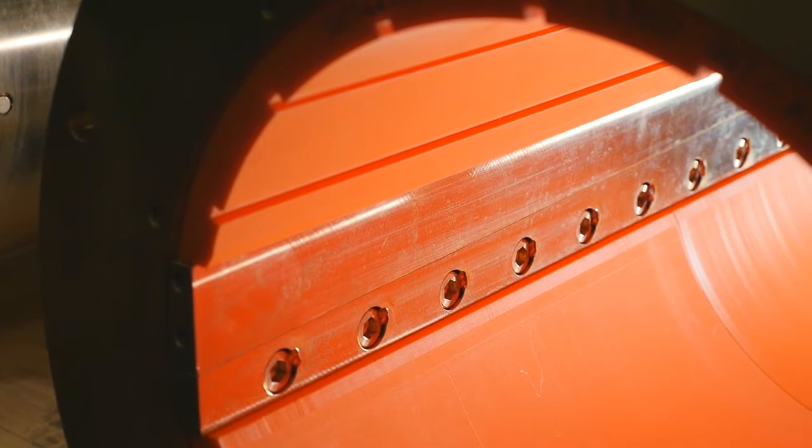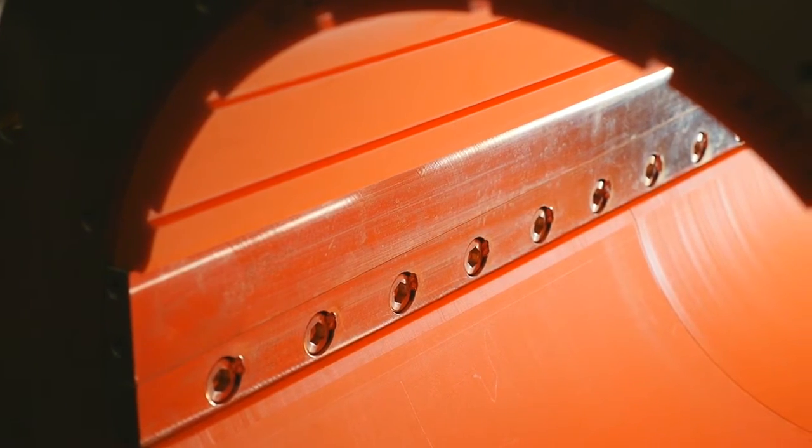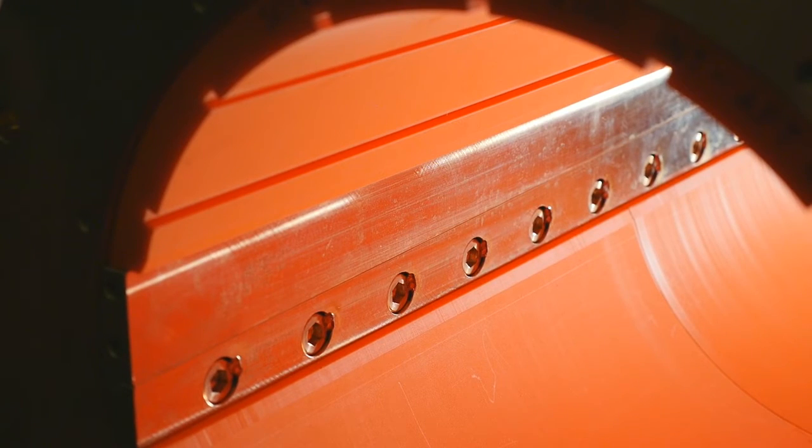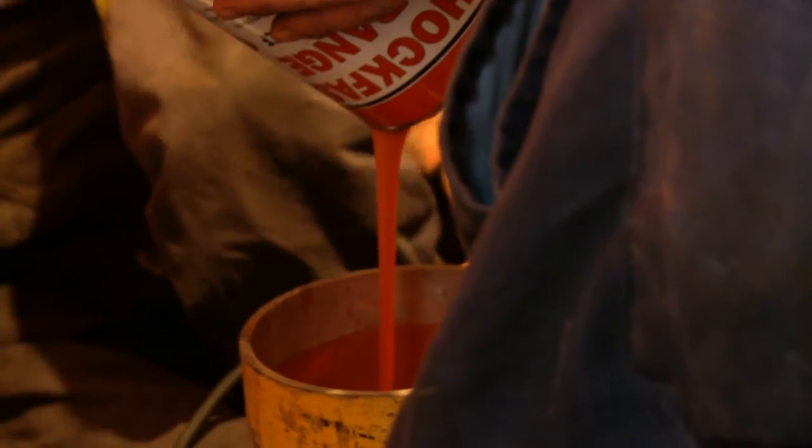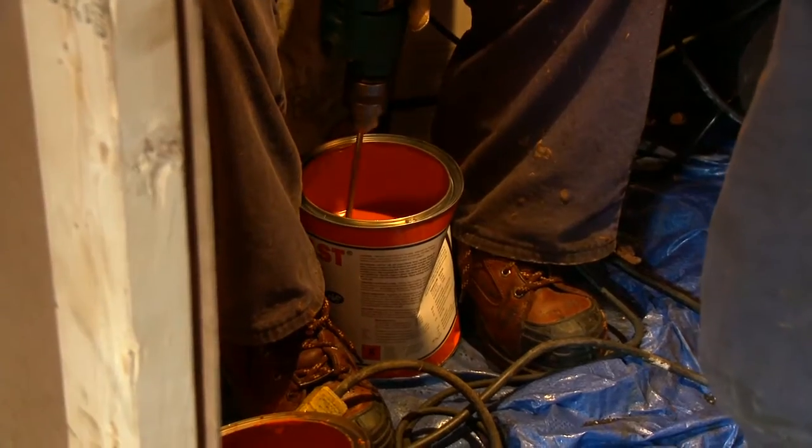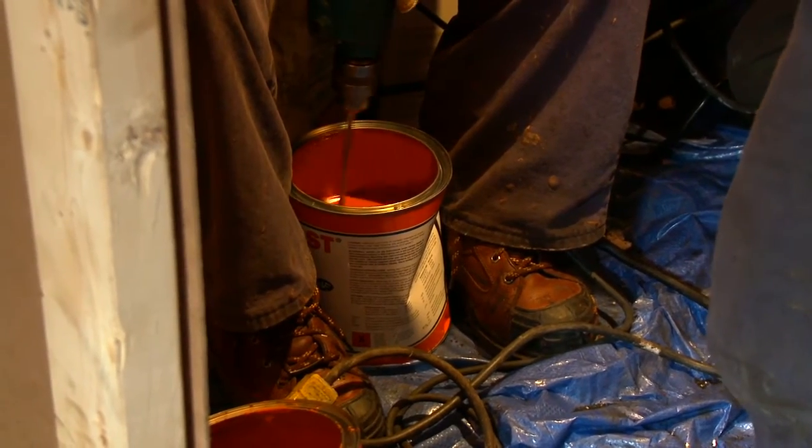Thordon still supplies many installations like this one where the bearing can be removed for inspection or replacement with the shaft still in place. The bearings are typically fitted with their carriers to the stern tube using epoxy resin chalking. This is the easiest and least expensive way to achieve proper alignment.